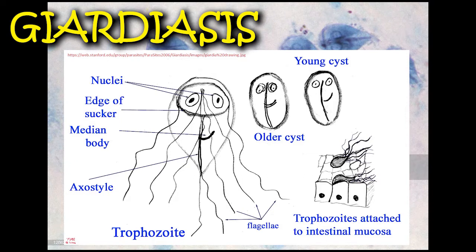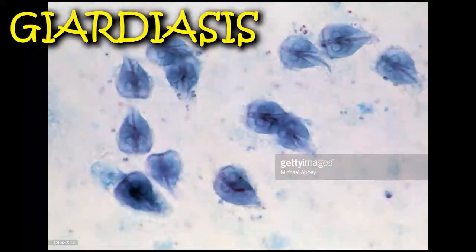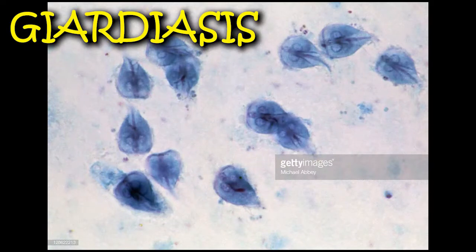Take note of the morphologic similarities and differences of a cyst and a trophozoite. Please watch this short YouTube video of what Giardia looks like under a microscope.